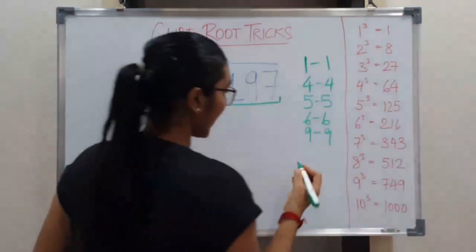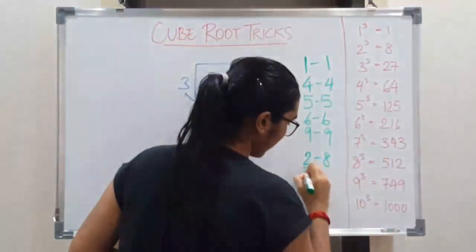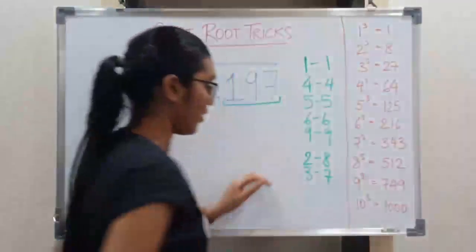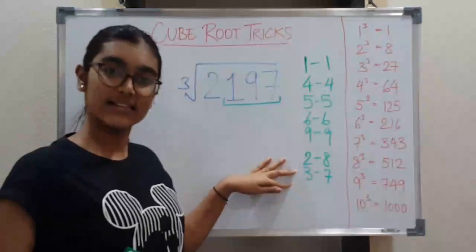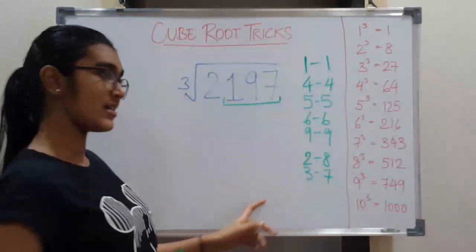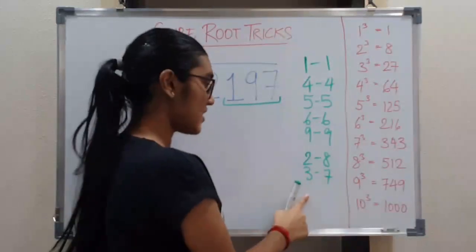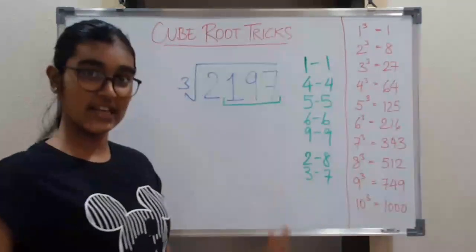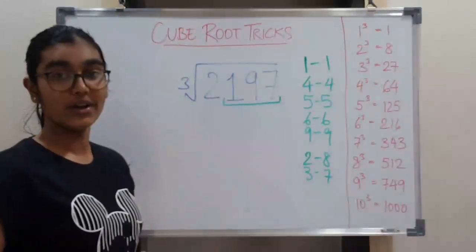Now the next part: 2 ends at 8 and 3 ends at 7. Here these two numbers are the exceptions. 2 ends at 8 and 8 ends at 2, that is the vice versa. 3 ends at 7 and 7 ends at 3. This table is clear. Now we move on to the trick.